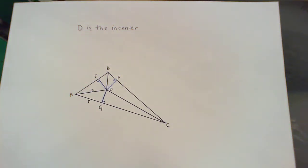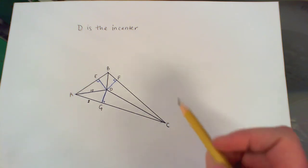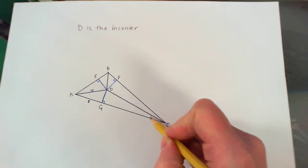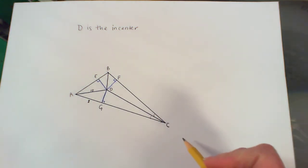This is the in-center, and the in-center D right here is going to be created from the angle bisectors of a triangle. So from C to D, CD is the angle bisector, so I'm going to mark these two angles being congruent to each other.